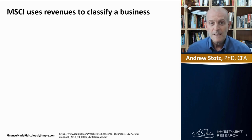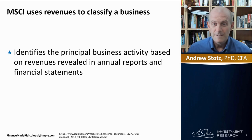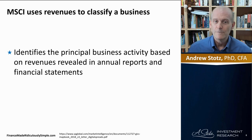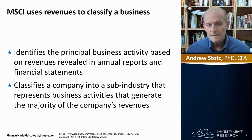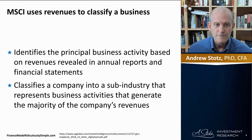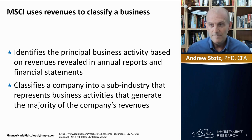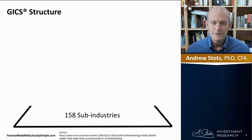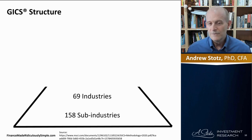MSCI uses revenues to classify a business for GICS. It identifies the principal business activity based on revenues revealed in annual reports and financial statements, and classifies a company into a sub-industry representing the business activities that generate the majority of the company's revenues. This starts at the bottom of a triangle with 158 sub-industries, and every company in the world fits into one of those sub-industries.